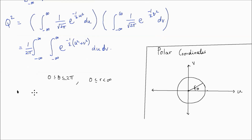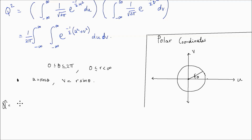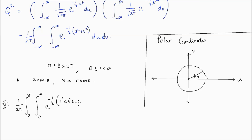Based on the picture, we write u as r cosine theta and v as r sine theta. So Q squared can now be written as 1 over 2 pi times the integral from 0 to 2 pi in theta and 0 to infinity in r, of e to the negative one-half times u squared plus v squared — where u squared is r squared cosine squared theta and v squared is r squared sine squared theta — and du dv is replaced by the absolute value of the Jacobian of the transformation times dr d theta.